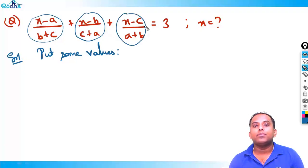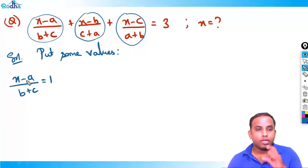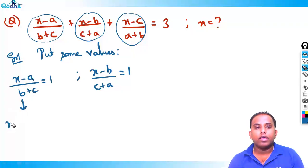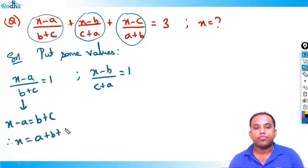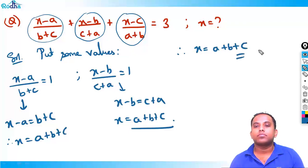The key observation is that the sum of three terms equals 3, so we can assume each term equals 1. Taking any term, say (x - b)/(c + a) = 1, gives x - b = c + a, so x = a + b + c. The same result holds for any term, so x = a + b + c is the answer.